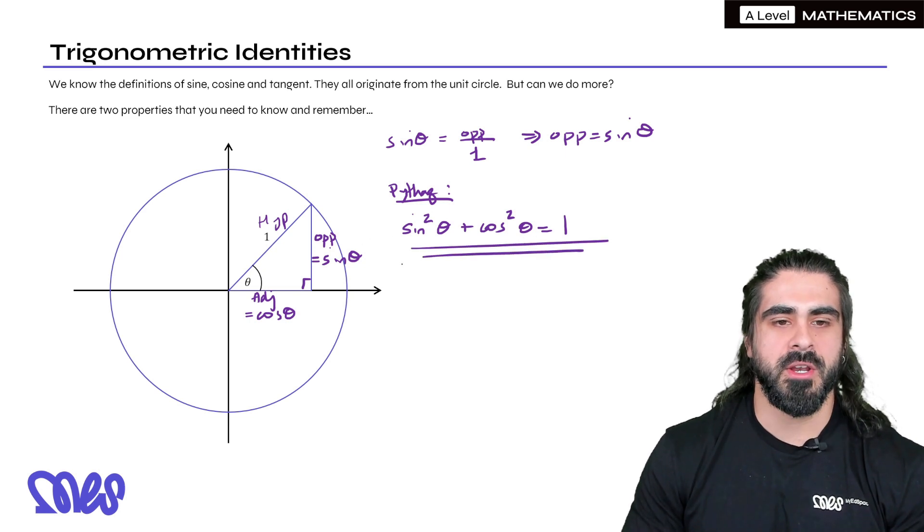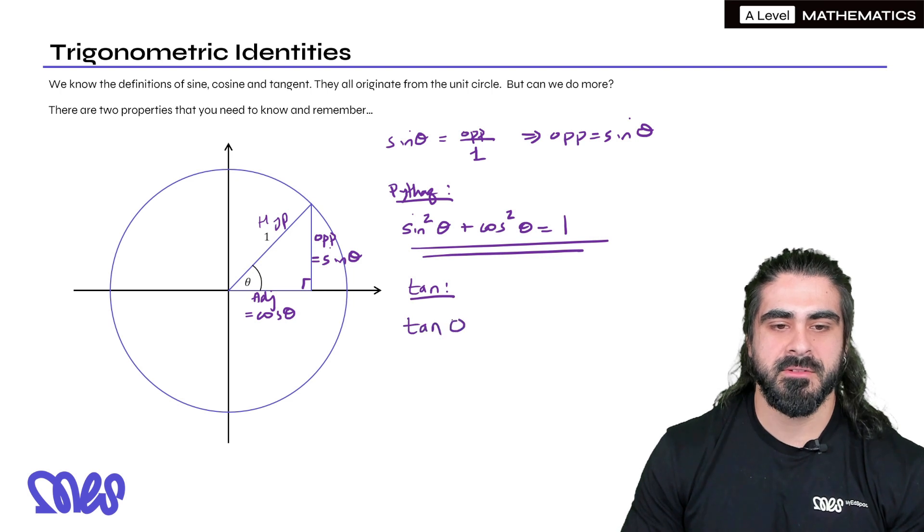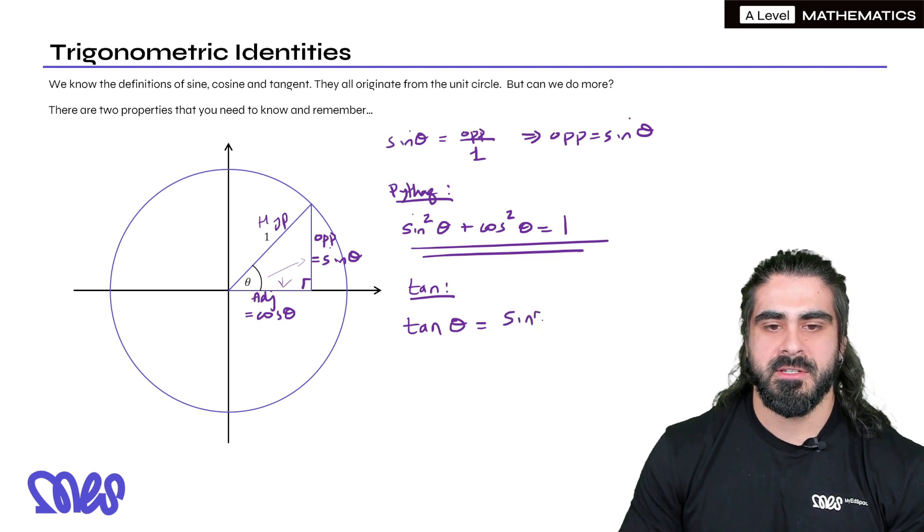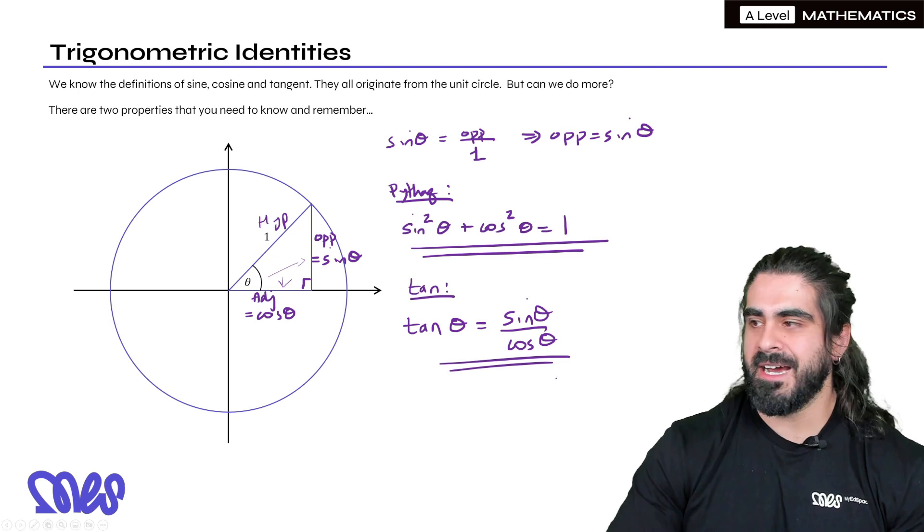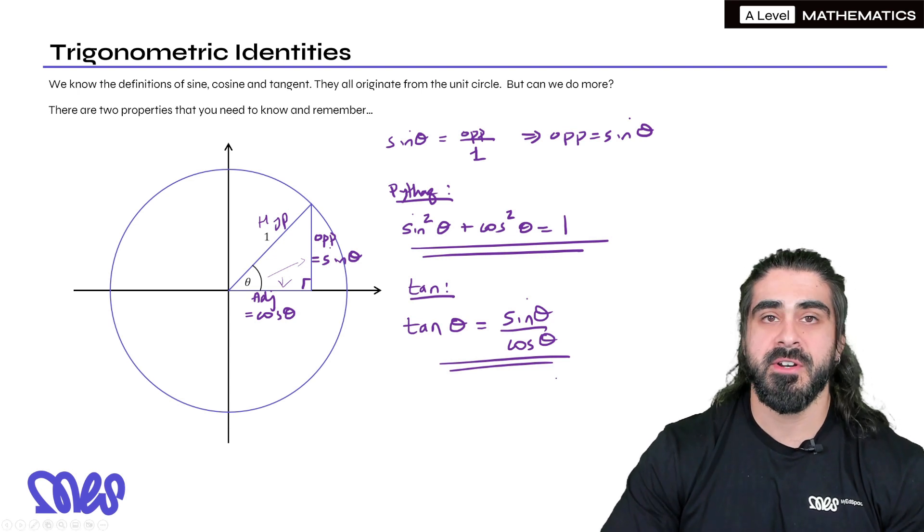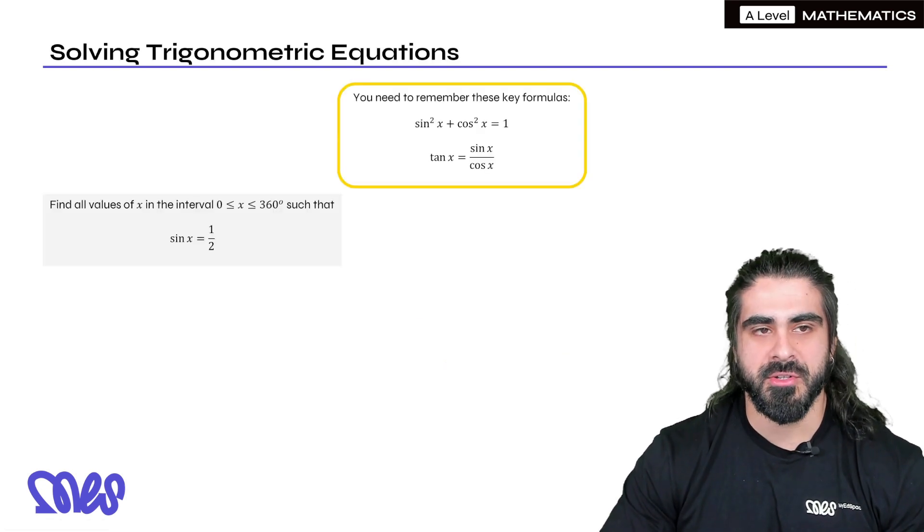Now what things can we do with a right angle triangle? The first thing we can say is Pythagoras's theorem. So when we apply Pythagoras, we get the two shorter length squared equals the hypotenuse squared. So we get sine squared theta plus cos squared theta is 1. And this is the first identity we need to remember.